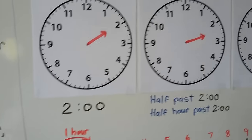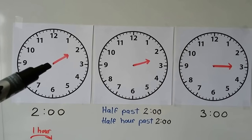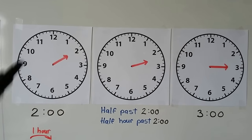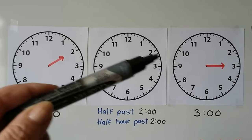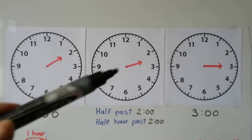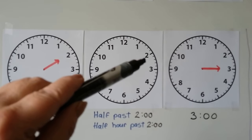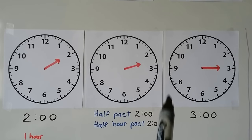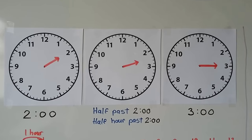Here we have three clocks. This one says two o'clock — the hour hand is pointing at the two. This one says half past two o'clock, or half hour past two o'clock, because the hour hand is pointing in between the two and the three. And this clock says three o'clock because the hour hand is pointing to the three.